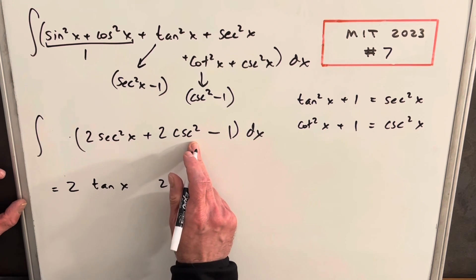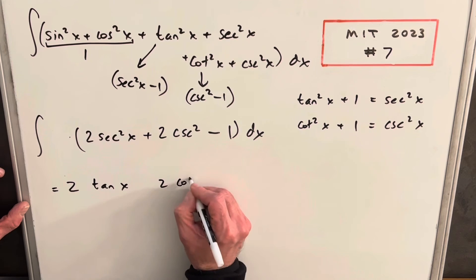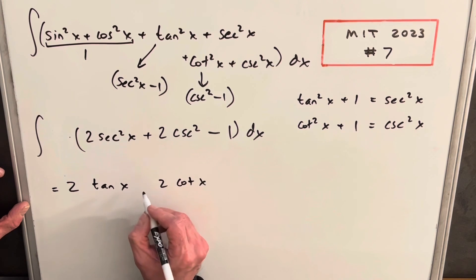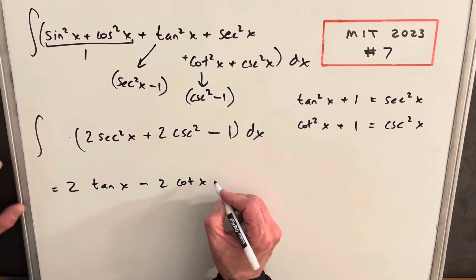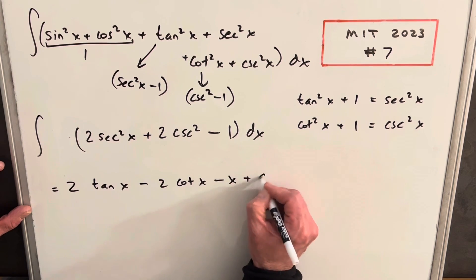Then the integral of cosecant squared is minus cotangent x. We'll have a minus here. And then minus 1 is going to be minus x plus c.